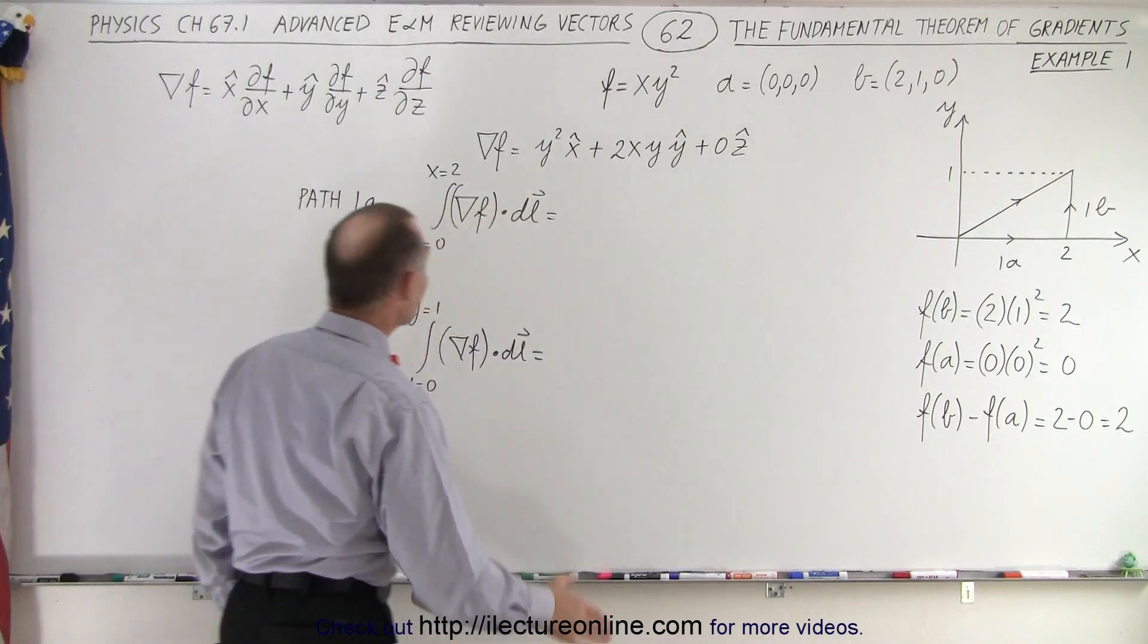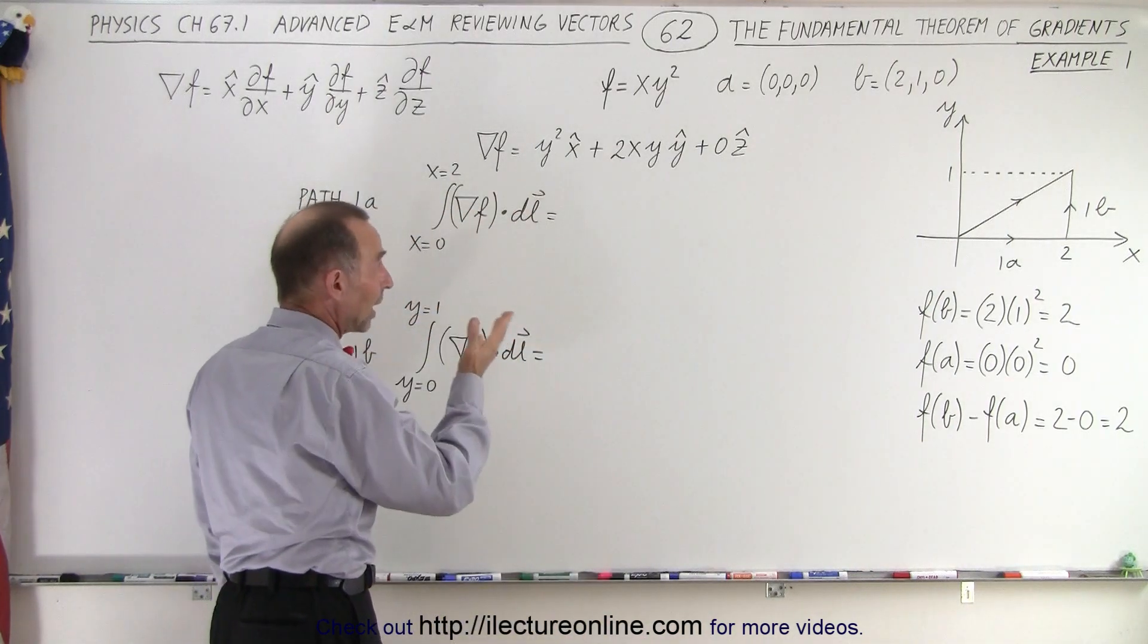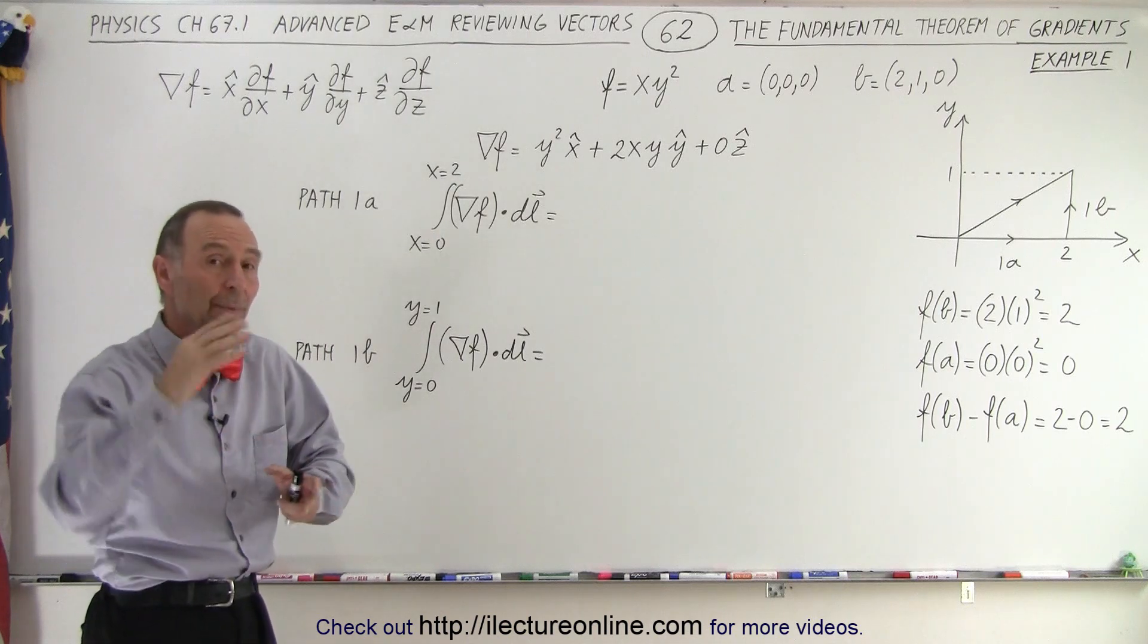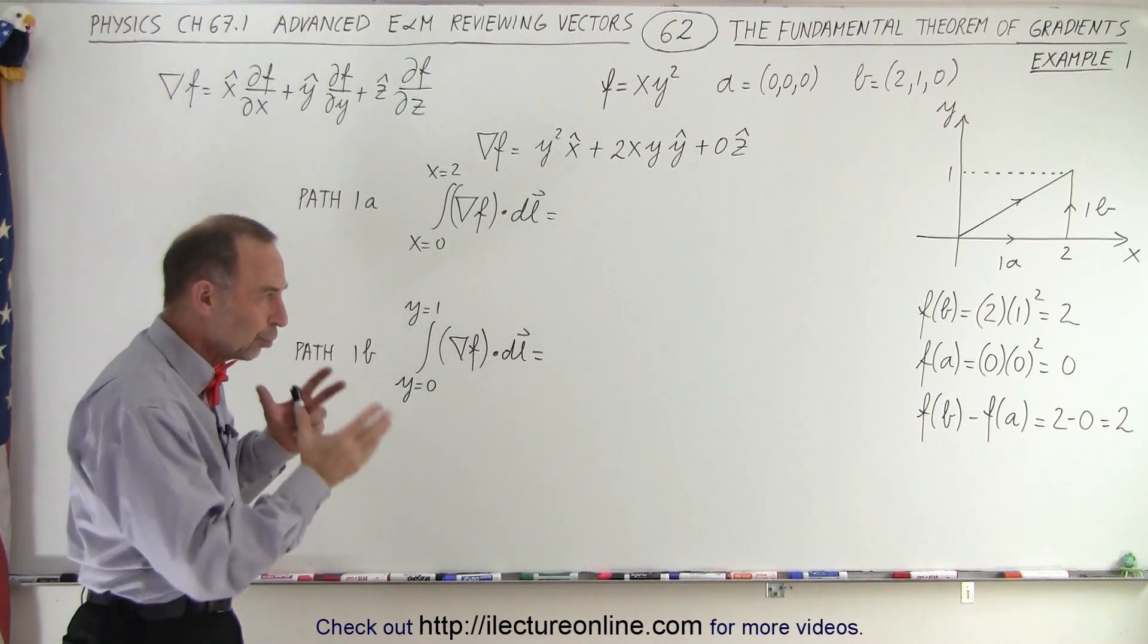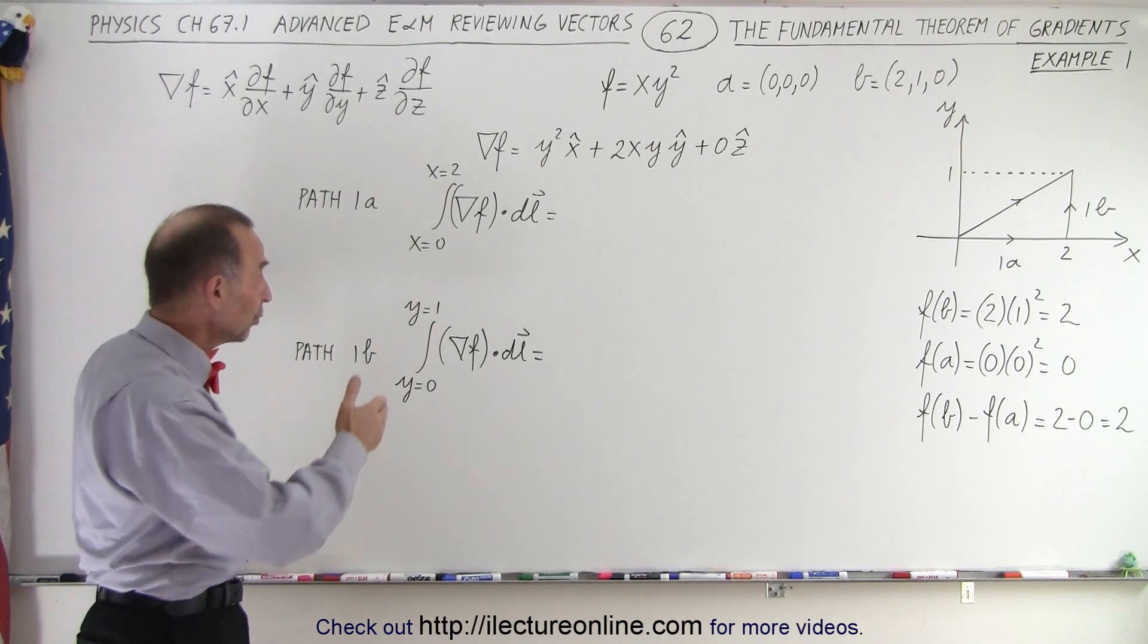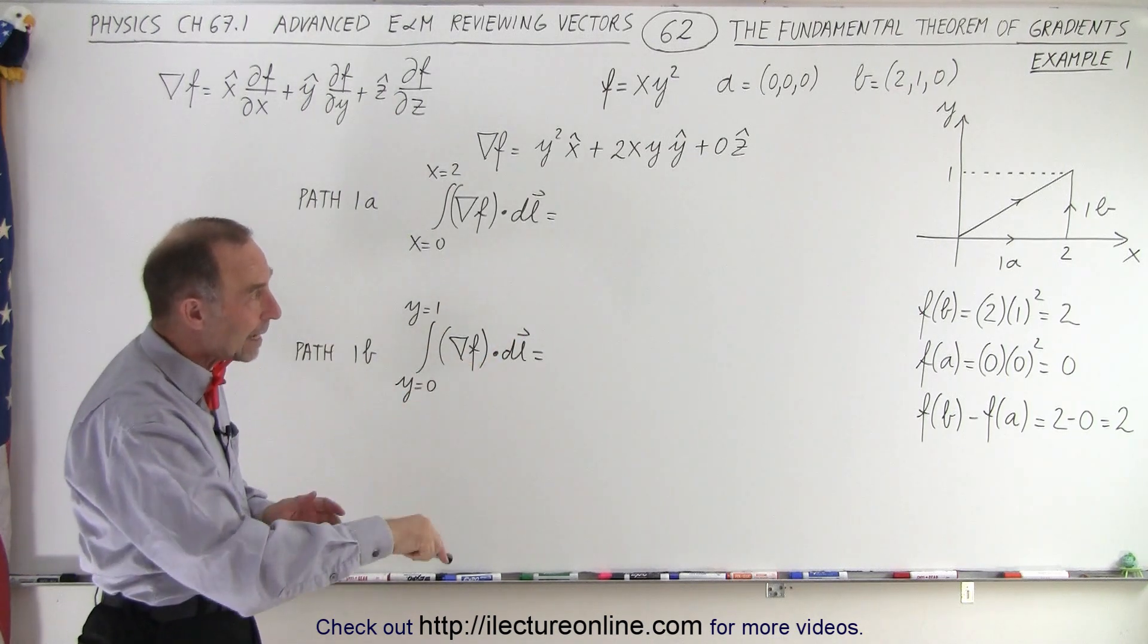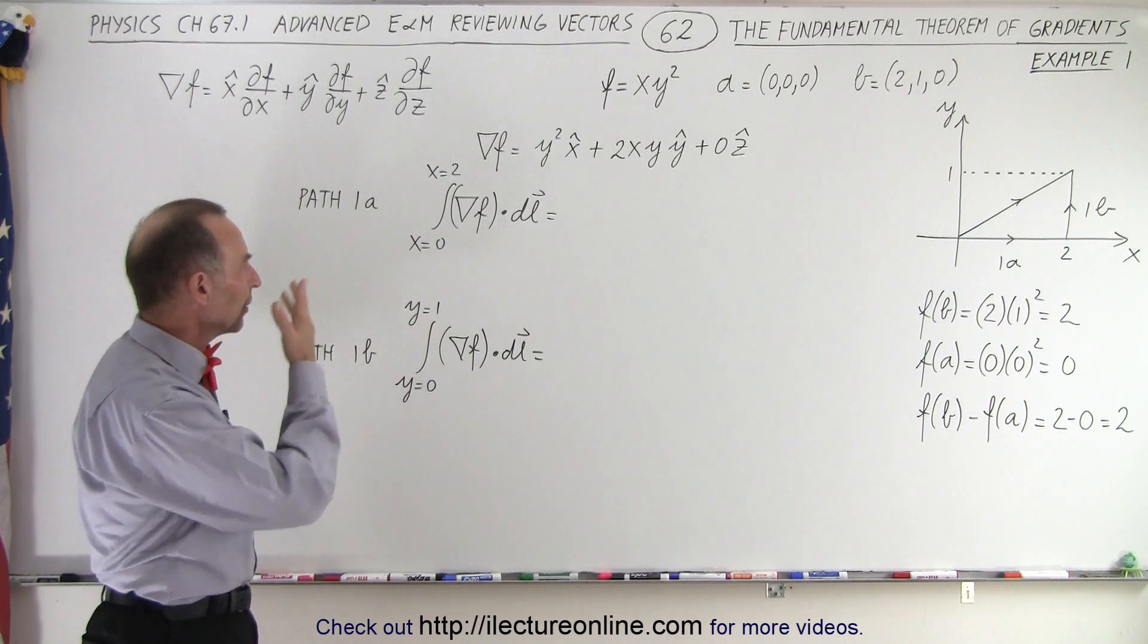Which means that if we then go ahead and work it out on the left side, we take the gradient first, then we dot it with dl, and then we take the integral and evaluate it, we should get the same result. Of course, we need to do it twice, because we have the path broken into the path 1A and path 1B.